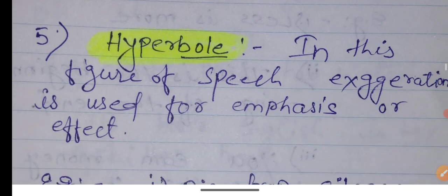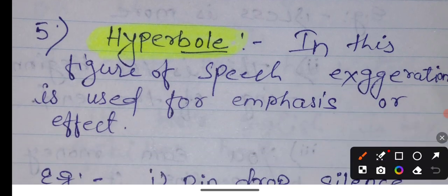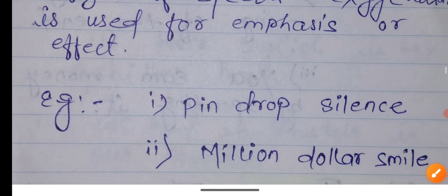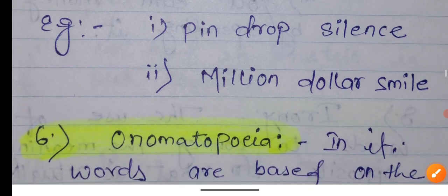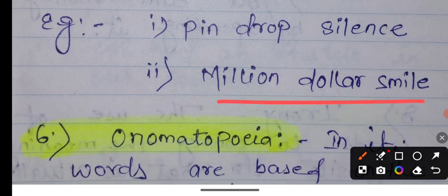This is hyperbole. In this figure of speech, exaggerations are used for emphasis and effect. Examples: pin drop silence. Million dollar smile. This smile is million dollars, so much bigger than that.